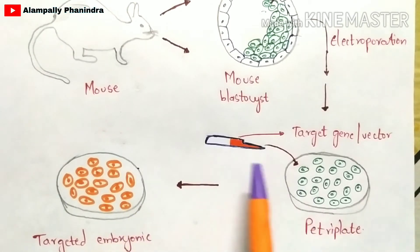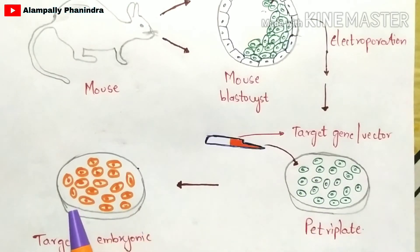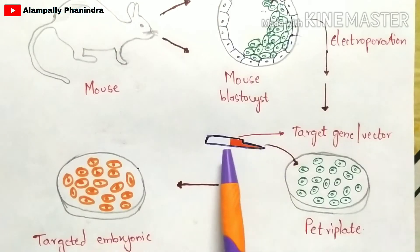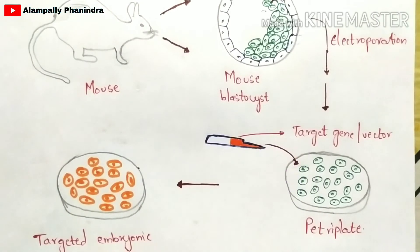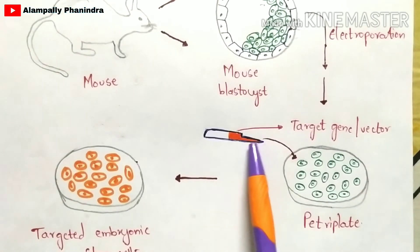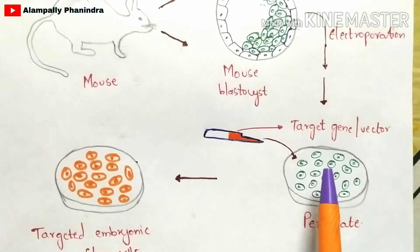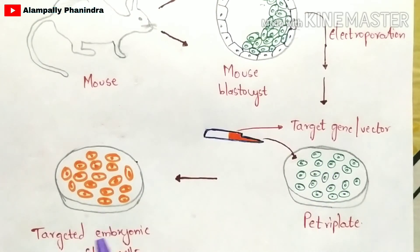The target gene vector is introduced into the petri plate. The embryonic stem cells get converted into targeted embryonic stem cells. They are called targeted embryonic stem cells because the target gene has been introduced into the petri plate containing the embryonic stem cells.